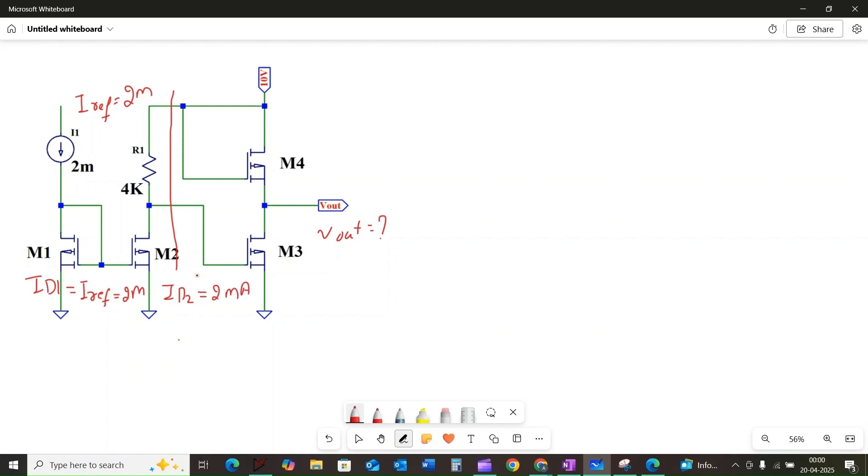It's like a perfect copy. Now let's look at what happens with the gate voltage. Remember that the gate current in the MOSFET is practically zero. This means the 2 milliamps current flowing through MOSFET M2 is the same current flowing through the resistor R1, which is 4 kilo-ohms.